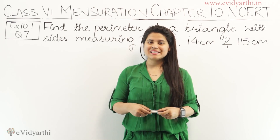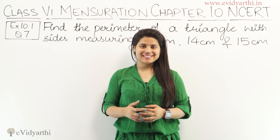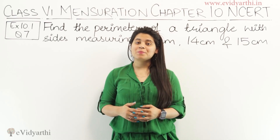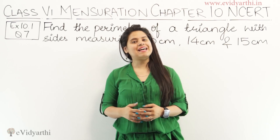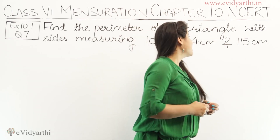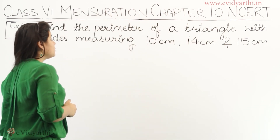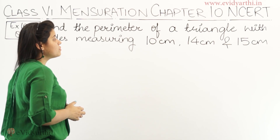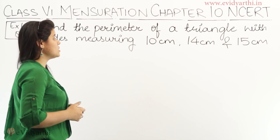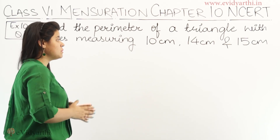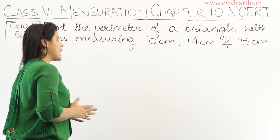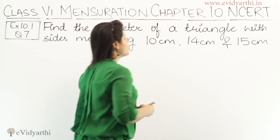Hello everyone, this is Pansi from Evidyarthi. Now we are starting with question number 7, exercise 10.1. In this question we have: find the perimeter of a triangle with sides measuring 10 cm, 14 cm and 15 cm.